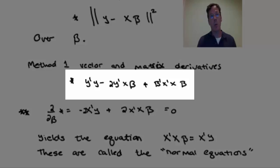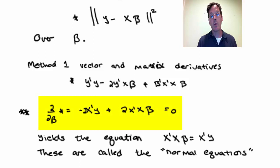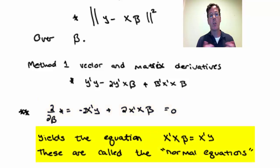We expand this out. We get y transpose y minus 2y transpose x beta plus beta transpose x transpose x beta. If we take the vector derivative with respect to beta, we get negative 2x transpose y plus 2x transpose x beta. Set that equal to zero. This yields the set of equations, x transpose x beta equals x transpose y. These are the so-called normal equations.